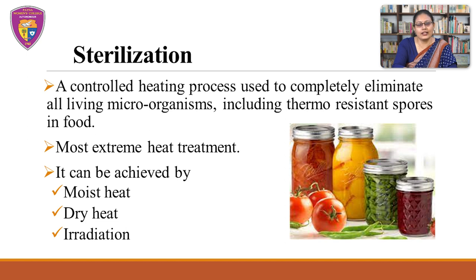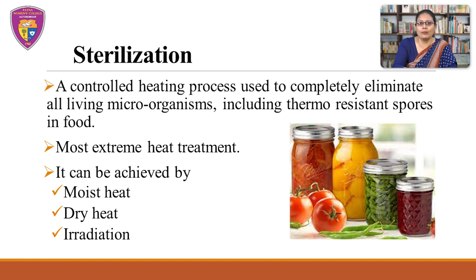Next is sterilization. It is a controlled heating process used to completely eliminate all living microorganisms including thermoresistant spores in food. It is the most extreme heat treatment given in the preservation of food by heat. Usually the target organism is a heat-resistant pathogenic microorganism, most often a spore-forming rather than a vegetative one. Sterilization can be achieved by moist heat, dry heat, and irradiation. The aim of sterilization is the destruction of all bacteria including their spores.